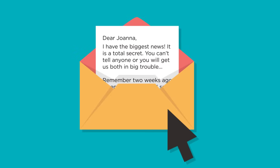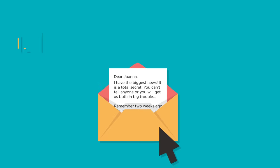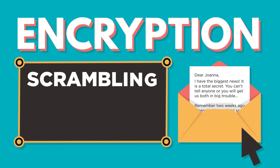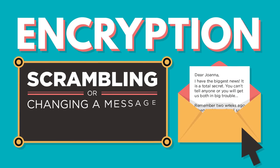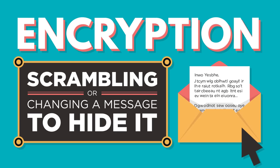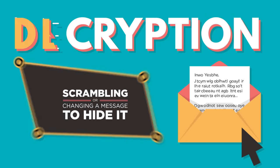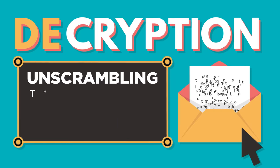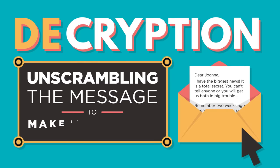Data of any kind can be kept secret through a process known as encryption — the scrambling or changing of the message to hide the original text. Decryption is the process of unscrambling that message to make it readable.